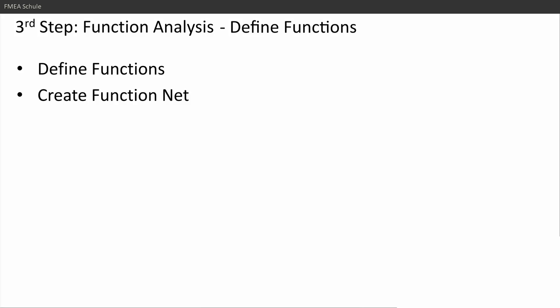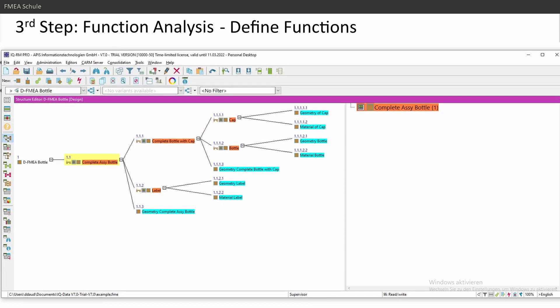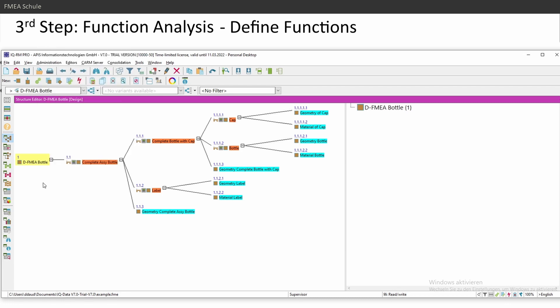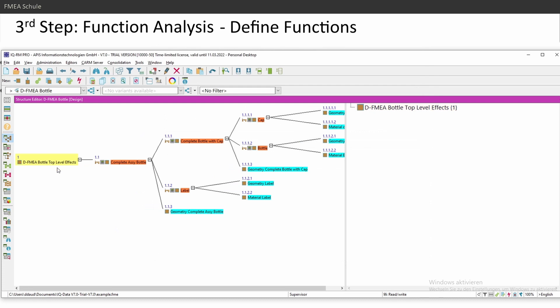The next step is function analysis. The first thing is to define functions. Let's start with the complete assembly bottle and the function effects — I will insert these in the Design FMEA. I'll rename the very first system element by double-clicking on it and change the name to 'top level effects,' where I can insert the functions of my bottle.